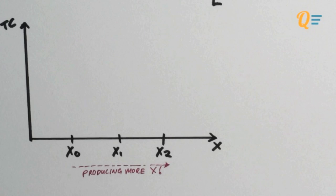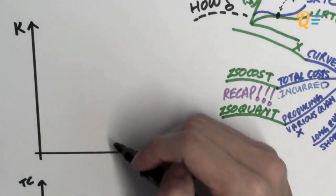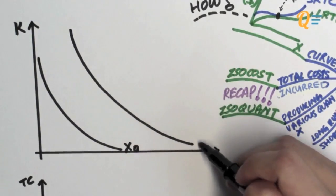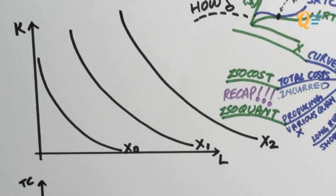So now I want to find out what would be the total cost for producing each quantity of X. Okay, so to show my quantity I'm going to have to use isoquants, right? You got isoquants X naught, X1, as well as X2. You should really understand how isoquants work.